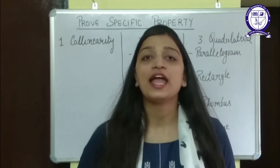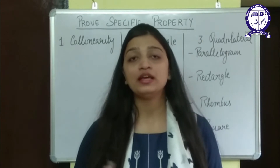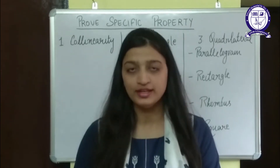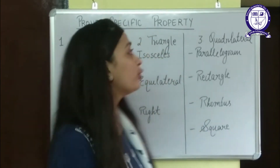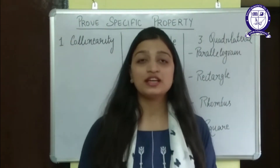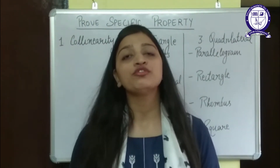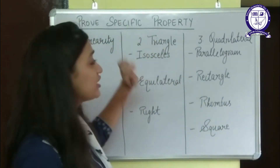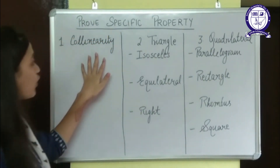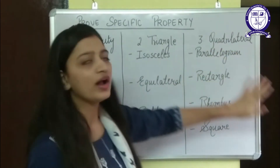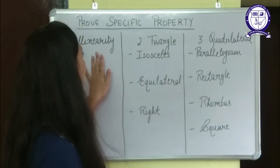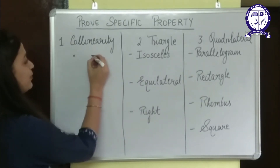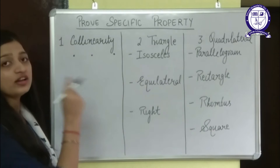There are basically three types of questions which can be asked related to the distance formula. The first is the simple one: finding the distance between any two points given. The second is proving a specific property — some points will be given and you need to find what kind of shape they make. These questions can be classified into collinearity, where points should lie on a straight line.